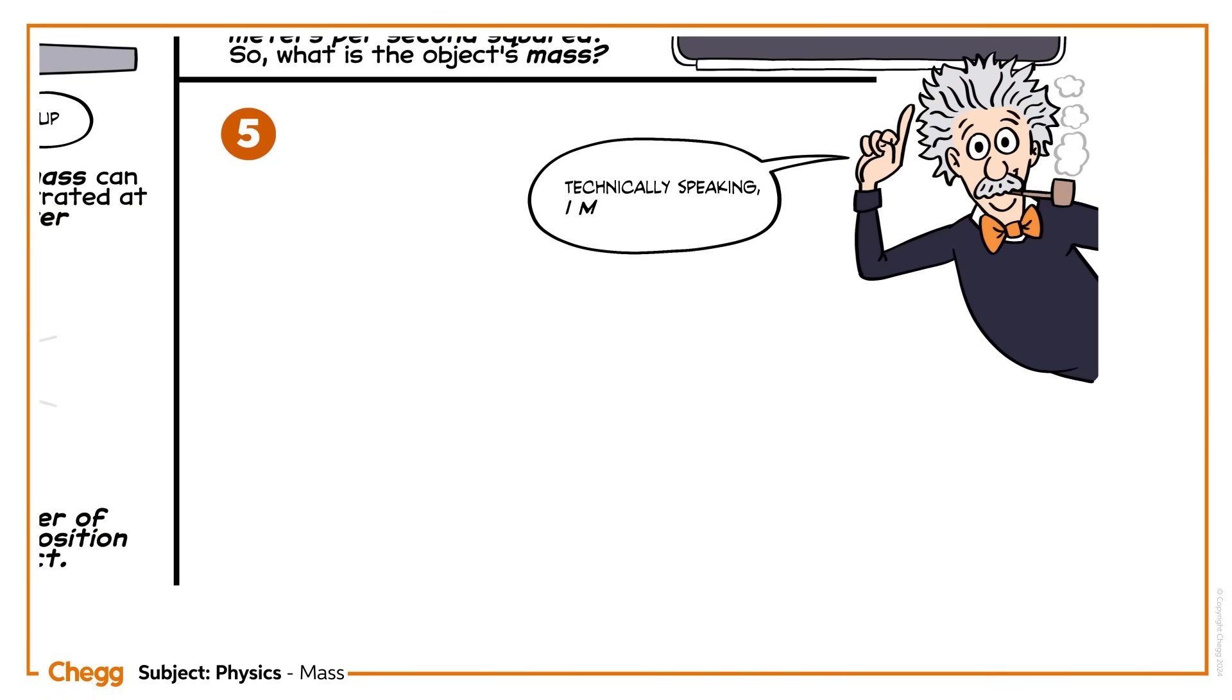Technically speaking, Einstein might disagree with the statement that mass is the same no matter where you are. That's because when he came up with his theory of special relativity, he introduced a measure called relativistic mass.